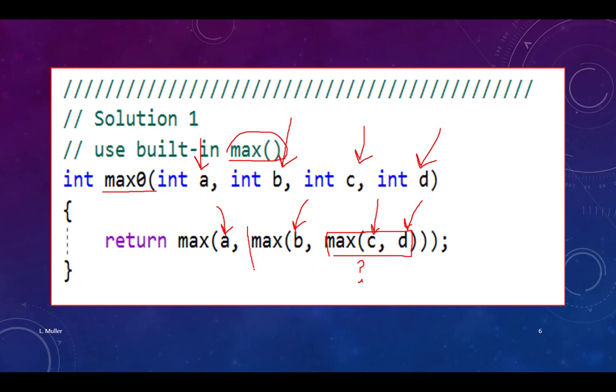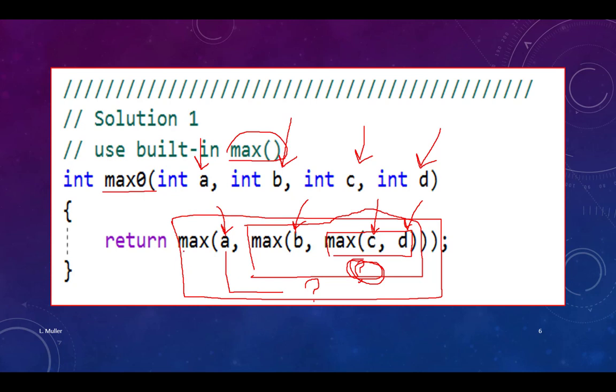That answer will be fed into this function, which will then take that first answer and compare it to b. And then it will give me some answer. And last, a will be compared to that value in this version of max. And eventually an answer comes out max.